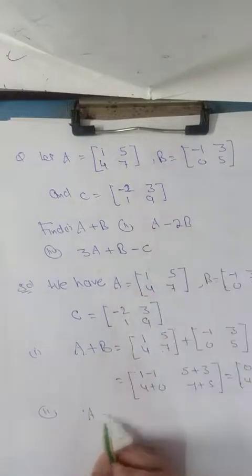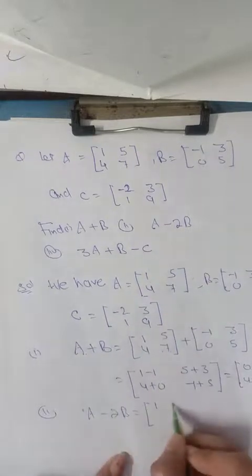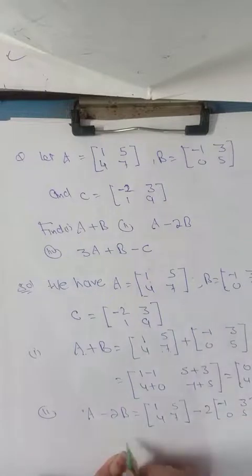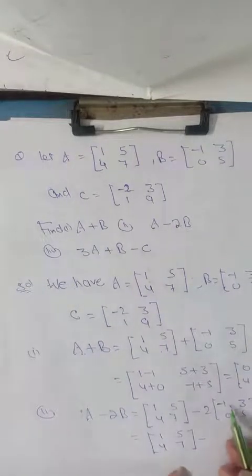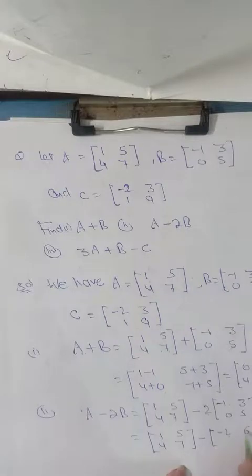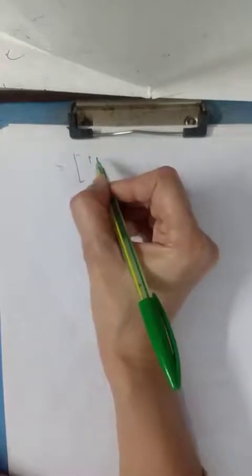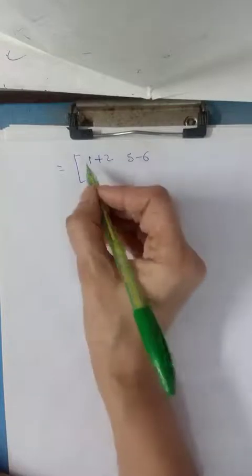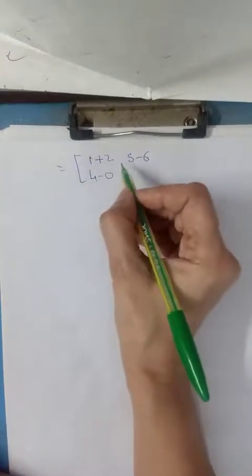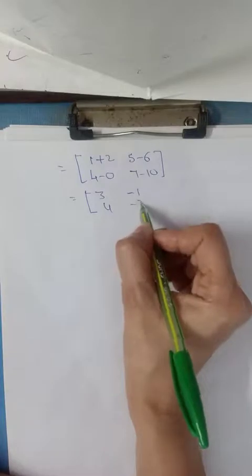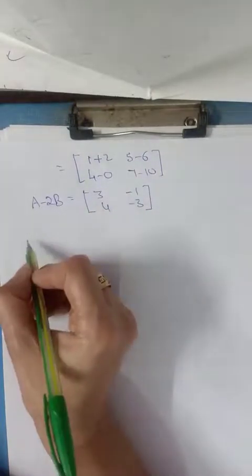Now, the second part is A minus 2B. So matrix A, 1, 5, 4, 7, minus 2 times matrix B, -1, 3, 0, 5. Each element of matrix B is multiplied by 2, so we have -2, 6, 0, 10. First multiply, then we will subtract. So it is 1 minus -2 equals 3, 5 minus 6 equals -1, 4 minus 0 equals 4, and 7 minus 10 equals -3. So this is the value of A minus 2B.